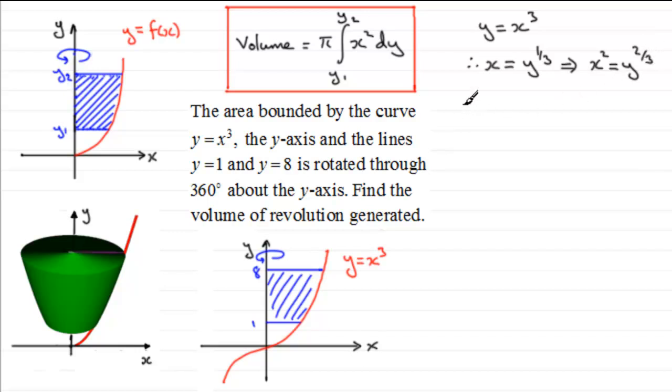So therefore that volume that we're trying to find is going to be equal to pi times the integral y going from 1 to 8 of x squared which we now know is y to the power two-thirds and we integrate this with respect to y.